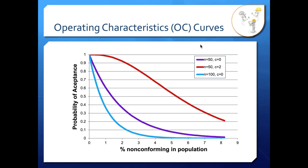C is how many non-conforming units you can have in your sample. Here in the purple curve and the blue curve, C is 0 and that means if we take a sample, we can't have any non-conforming units in that sample to say that the sample is acceptable. Whereas in the red curve, C is 2 and so that means in our sample, we can have two non-conforming units and still call the sample acceptable.